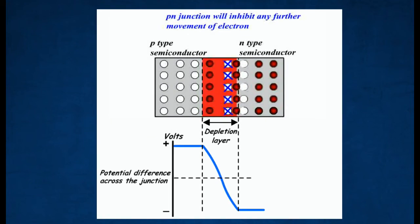As negative charges on the P-type semiconductor build up, a potential difference that opposes further diffusion of charges across the junction is produced. This potential difference is about 0.6 volts for silicon and about 0.2 volts for germanium. This is called the barrier potential.